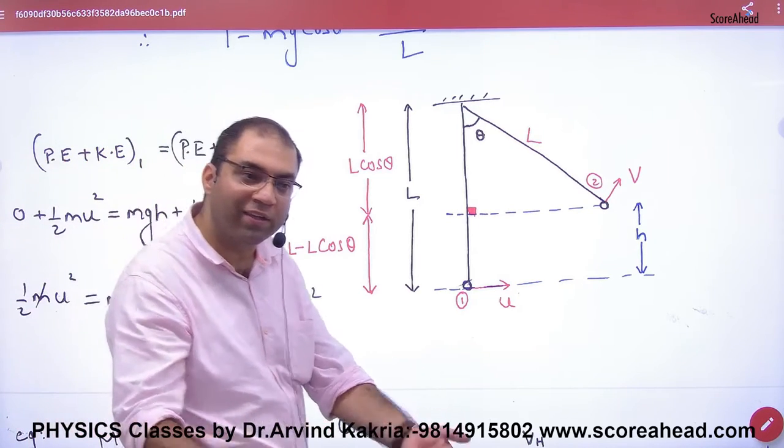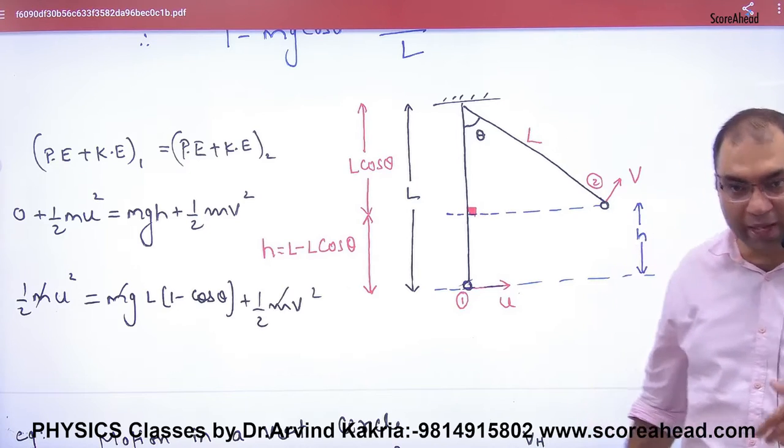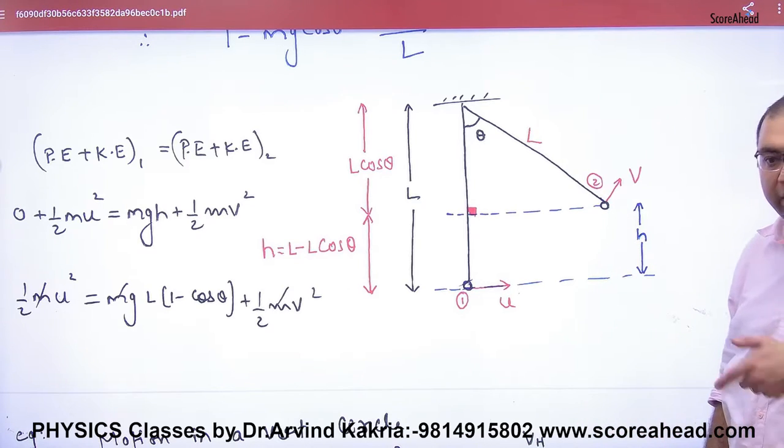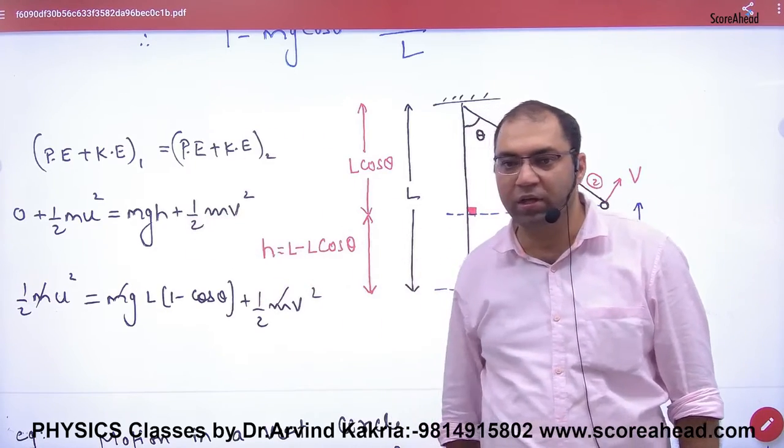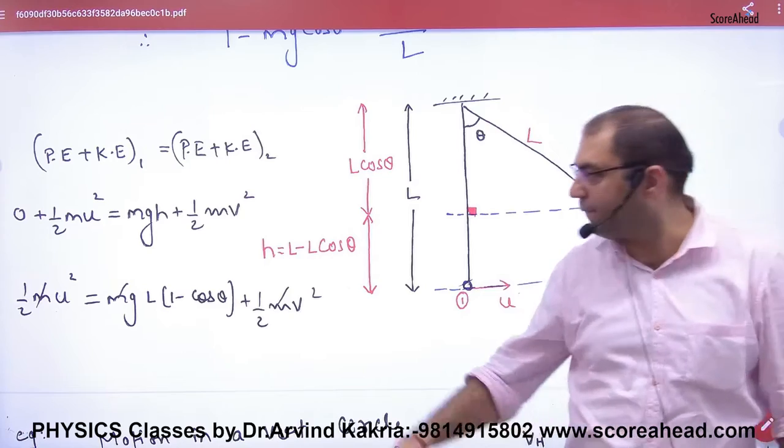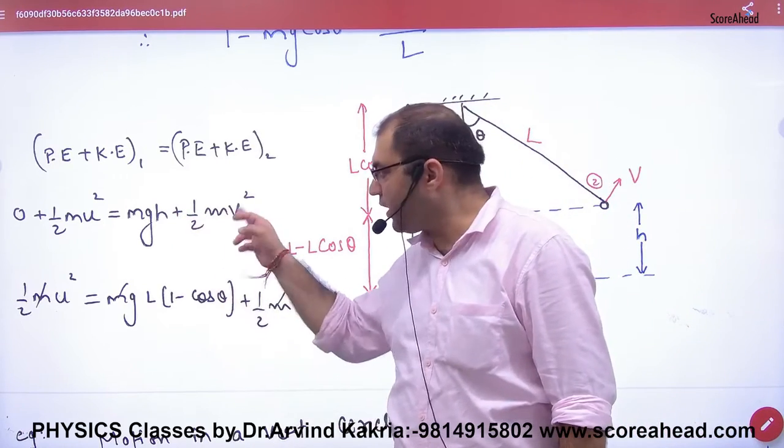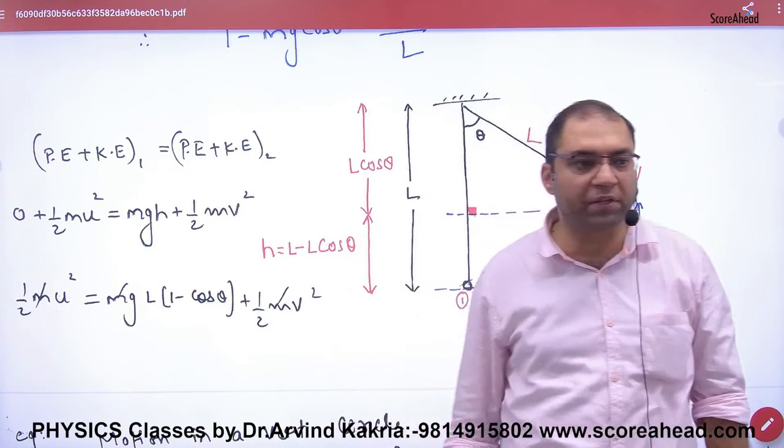V is not given, and h is also not directly given. h is the distance from ground. The problem is finding h. Once h is found, we can find v, and then tension can be calculated.